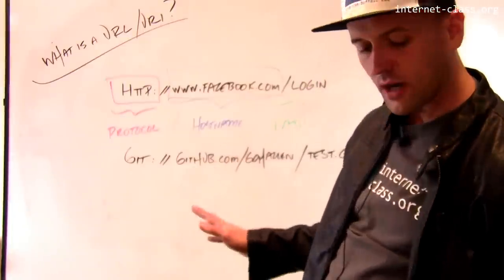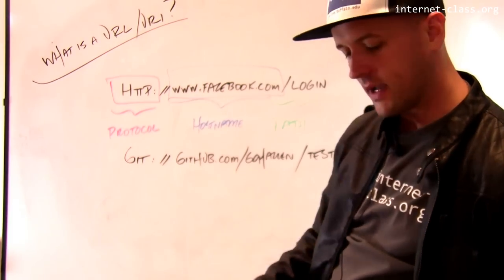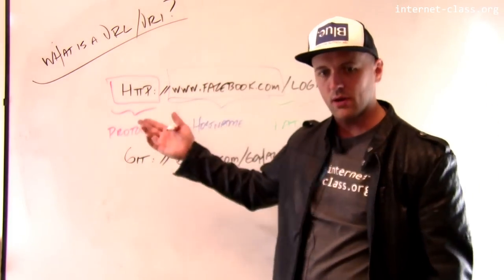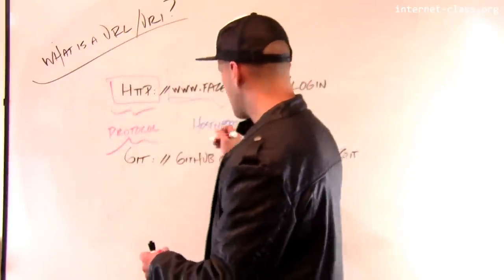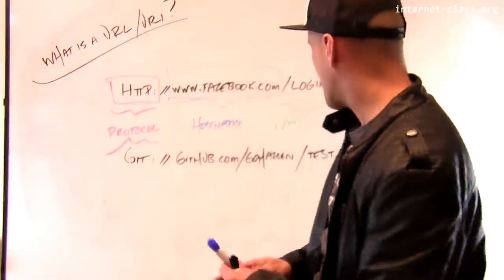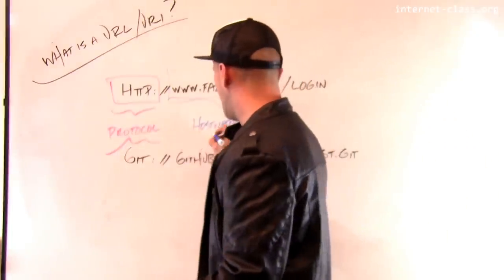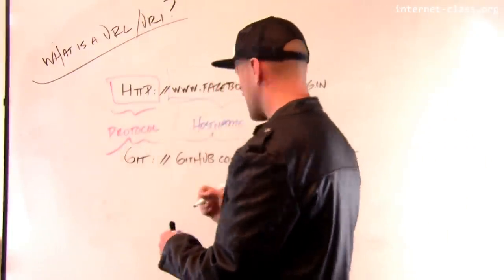And the structure of this is somewhat similar, right? So we can sort of map it onto the web URL that you're used to. I have a protocol over here. I have a host name in the middle. And on the right, I have some sort of path. But the semantics of this URL are totally different.